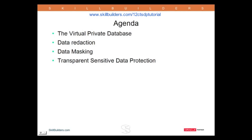Data Masking actually changes the data in the database — it's a permanent change. That makes it suitable for non-production systems, all those clones you make. When you clone your databases to test systems, to development systems, to DSS query systems, and so on, you have to clean the data. You have to remove all the personal references so that people can't see any of the personal indicators as you move your data from production to the warehouse or from production to development. That's where Data Masking comes in — a permanent change made to the data, typically on clone systems generated from your production boxes.